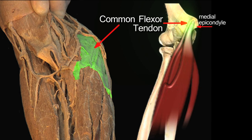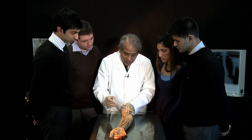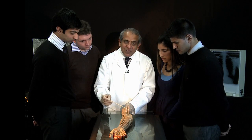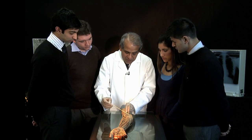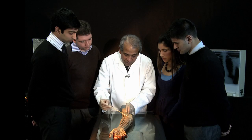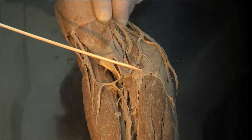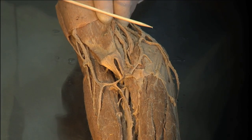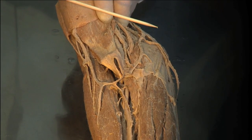It's a fibro-tendinous structure with very little muscle at the level of the medial epicondyle. But when you trace that away from the medial epicondyle, you see a number of muscles sprouting from the common flexor tendon.